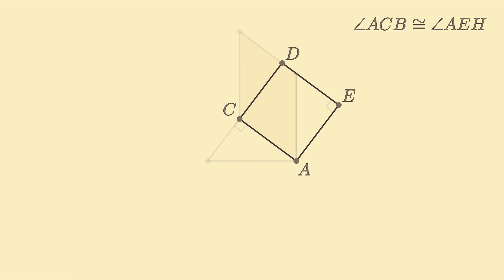We can glean another fact from the square AEDC. Since AEDC is a square, we know that sides AC and AE are congruent. Now we only need to show one more congruence and we will have established the congruence of triangles ACB and AEH.